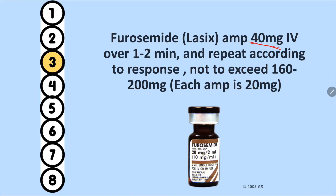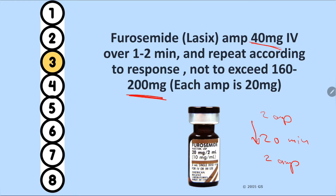Wait 20–30 minutes to assess the response to furosemide. If there is no response, give another two ampoules. Before each dose of furosemide, measure blood pressure — do not give more if the patient is hypotensive. Some textbooks state you can give up to 200 mg (10 ampoules), and some state up to 360 mg or more than 15 ampoules in total.